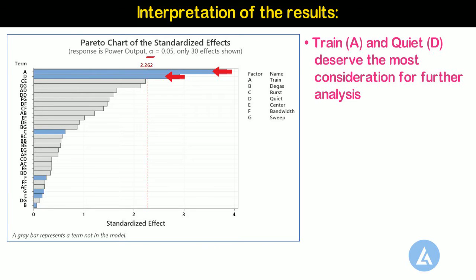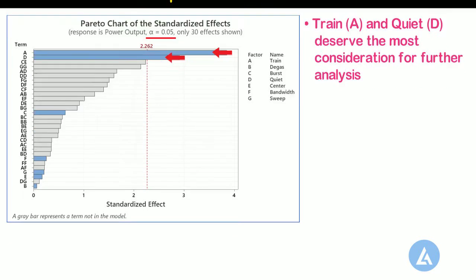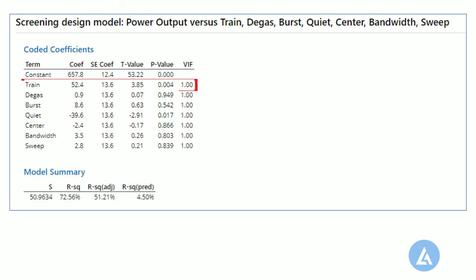In these results, the main effects for Train and Quoit are statistically significant at the 0.05 level, having p-values of 0.004 and 0.017 respectively.